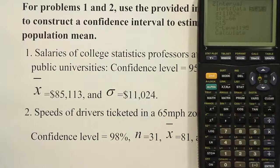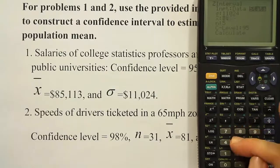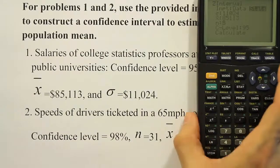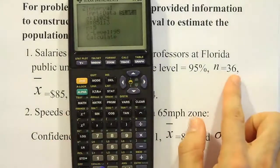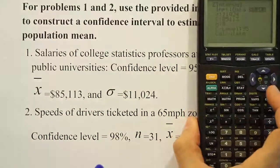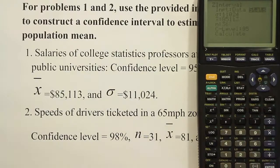Once you have that entered, you just push down and enter your x bar. That's 85,113. So 85,113 and go down to the n. Now if you remember, our n in this problem, the first problem, was 36, so we're going to use that. So n is 36.